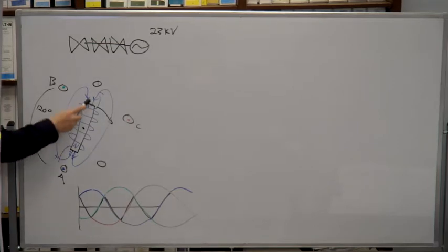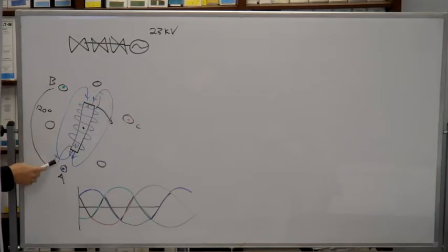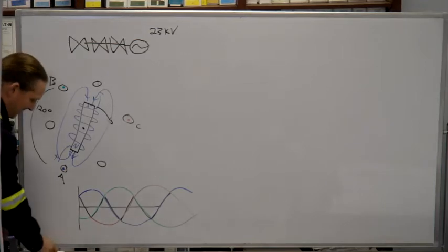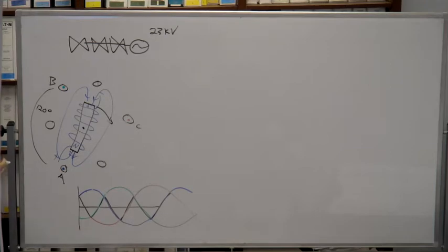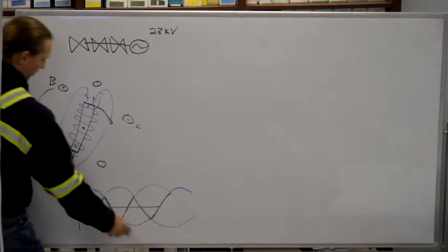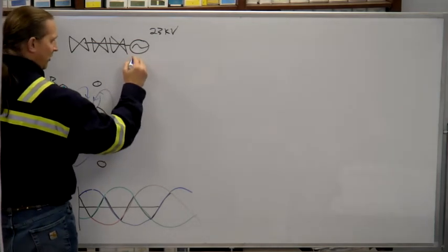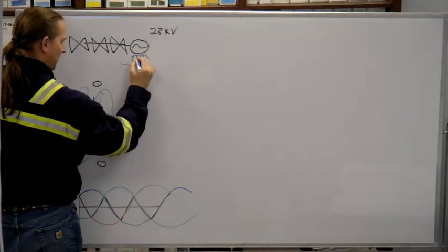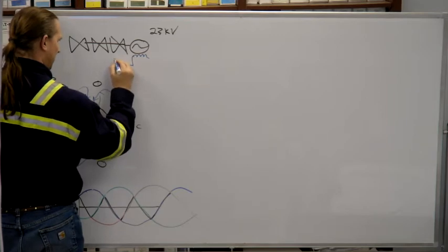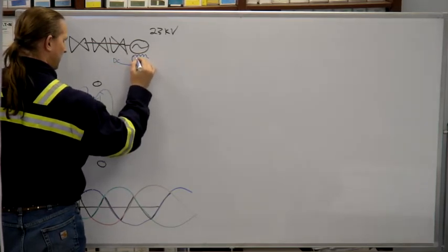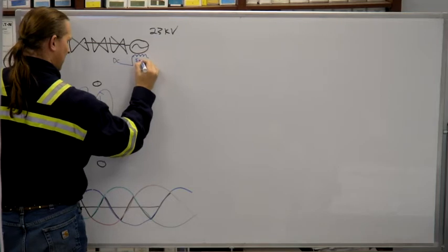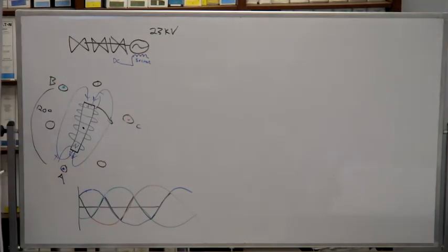So we got a positive and a negative voltage going into that loop that makes the exciter. Where does that come from? Alternating current. So we're making an alternating current, but the exciter has a direct current on it.